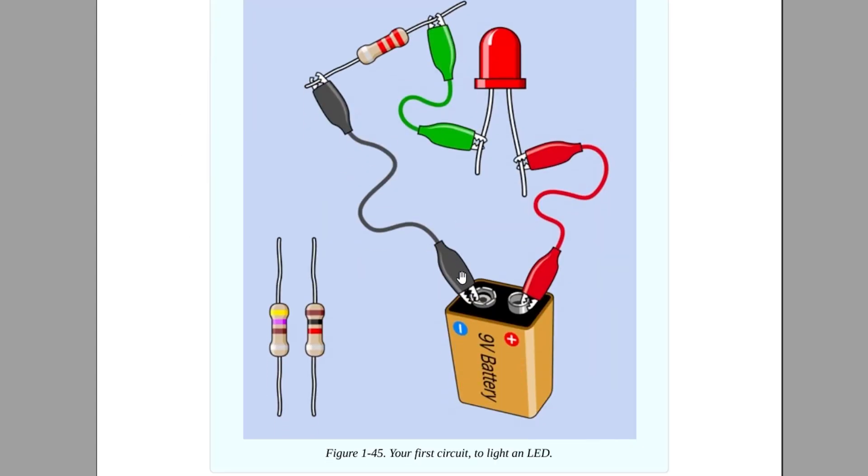Okay, and then this is ultimately the circuit that we're building. So we've got our three resistors here, two on the side, one that we're using. We're connecting the battery, the alligator clips to the battery. One of the alligator clips is going to the LED. The other one's going to the resistor. And then for me, I don't have this third green alligator clip. So I'm going to be connecting these two together. So let's do this.